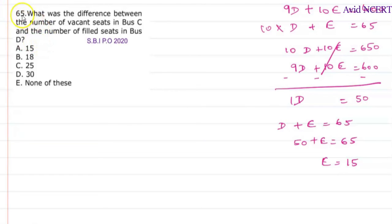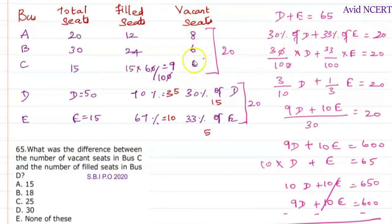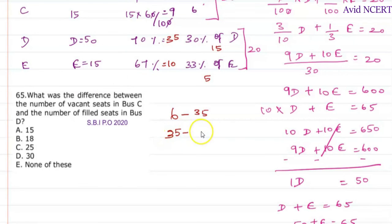Now we will be solving problem 65 from SBA PO 2020 question paper. What was the difference between the number of vacant seats in bus C and the number of filled seats in bus D? So from the data we have, number of vacant seats in bus C is 6. Since they are asking for difference, it's minus the number of filled seats in bus D, which is 35. So 35 minus 6 is 29. So the difference is 29, but we don't have the answer here, so the answer is none of these.